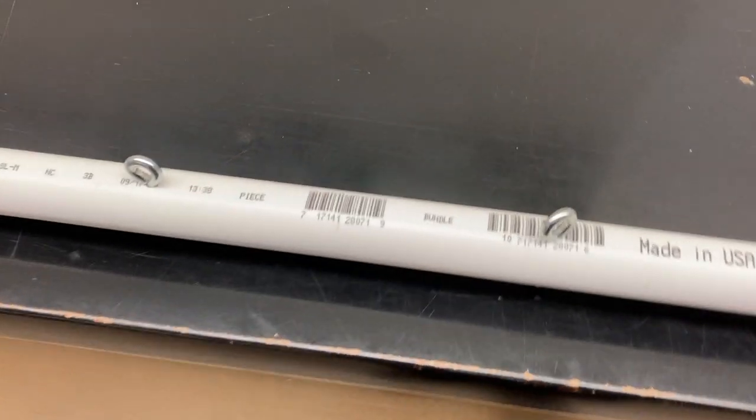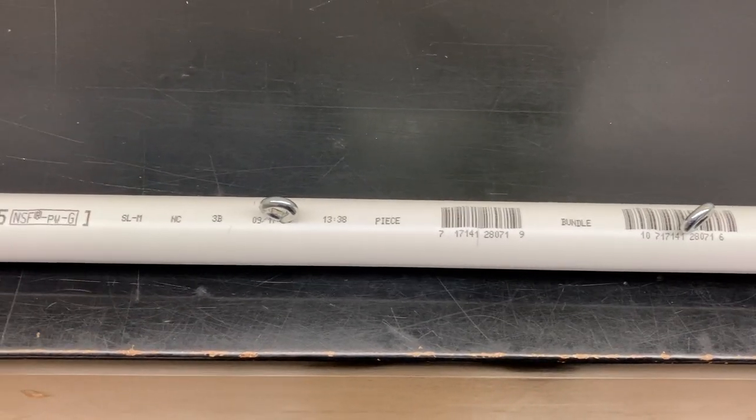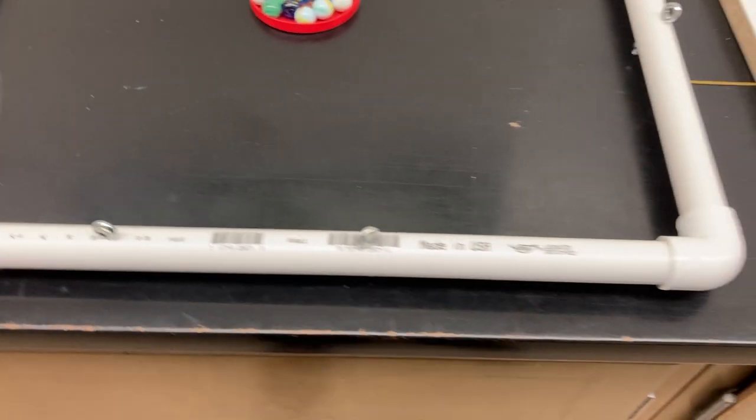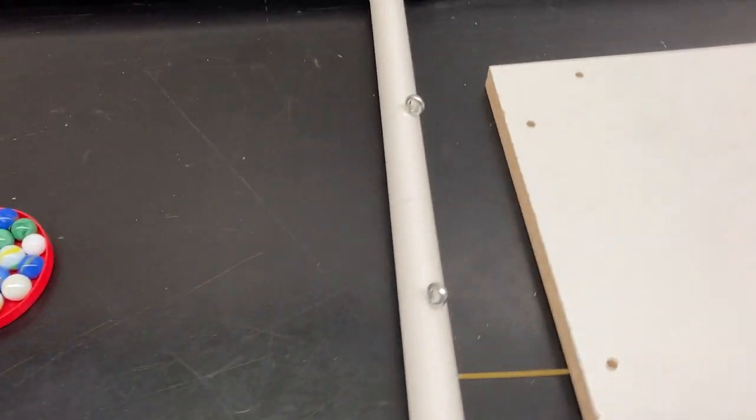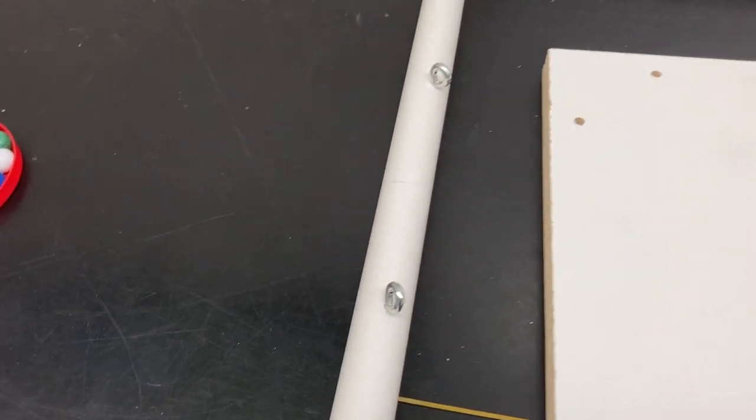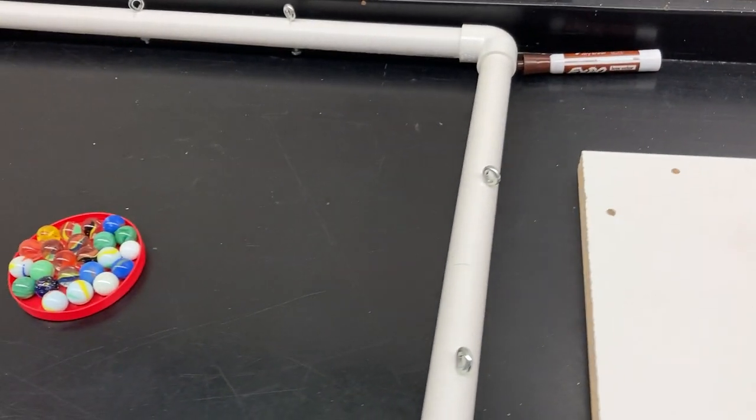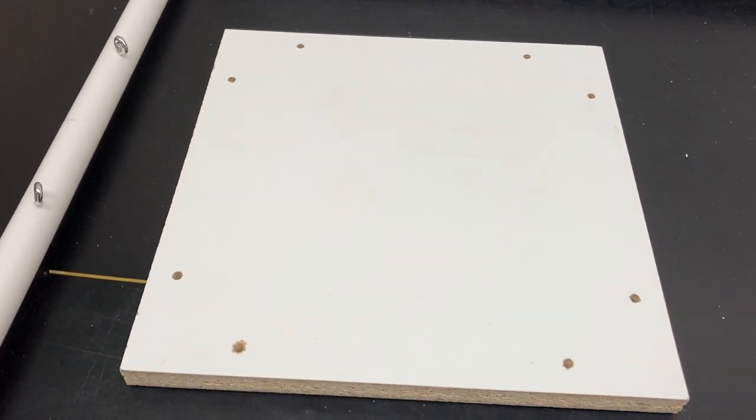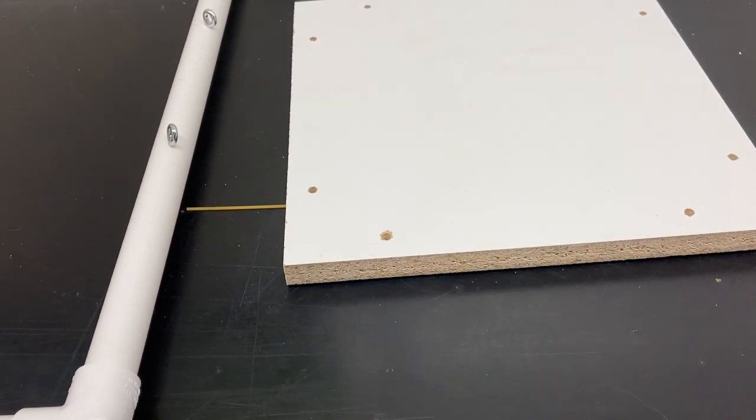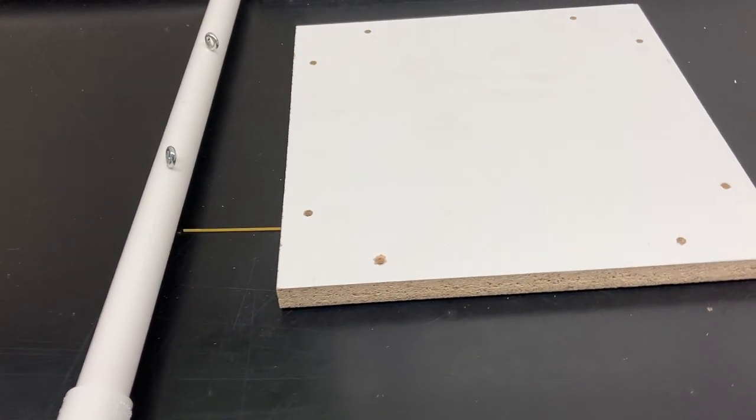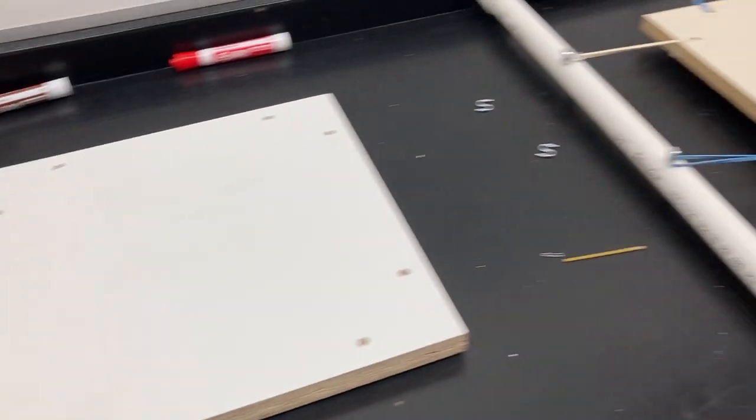I bought some three-quarter inch PVC, cut it to 20-inch sections, and got some elbows. I bought some eye bolts—three-sixteenths of an inch, two inches long. I cut some 12 by 12 plywood, actually this is MDF, and got rubber bands.